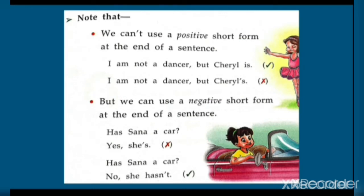Note that we cannot use a positive short form at the end of a sentence. For example: 'I am not a dancer, but she is.' We must use the full form 'she is' here — we cannot use a short form.